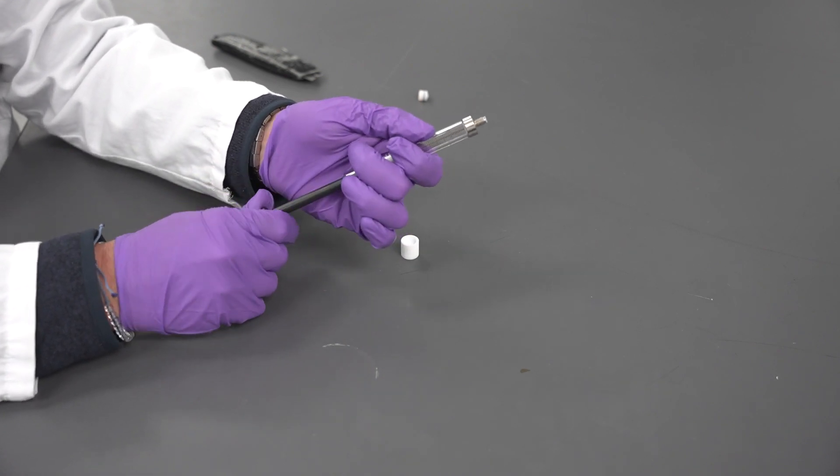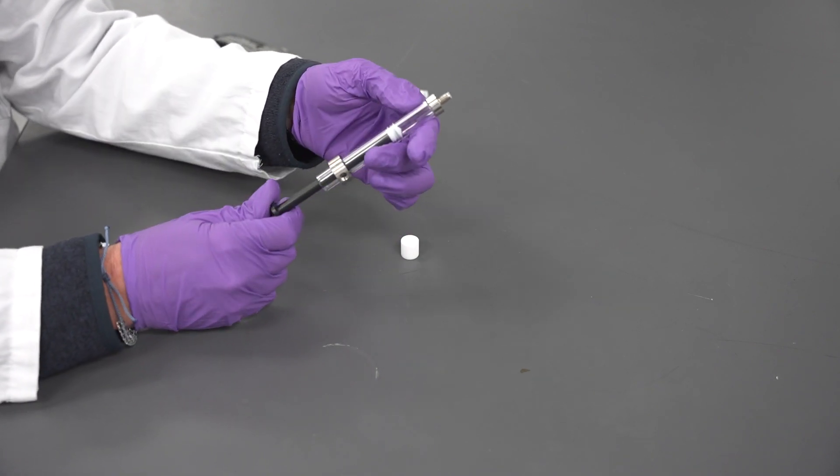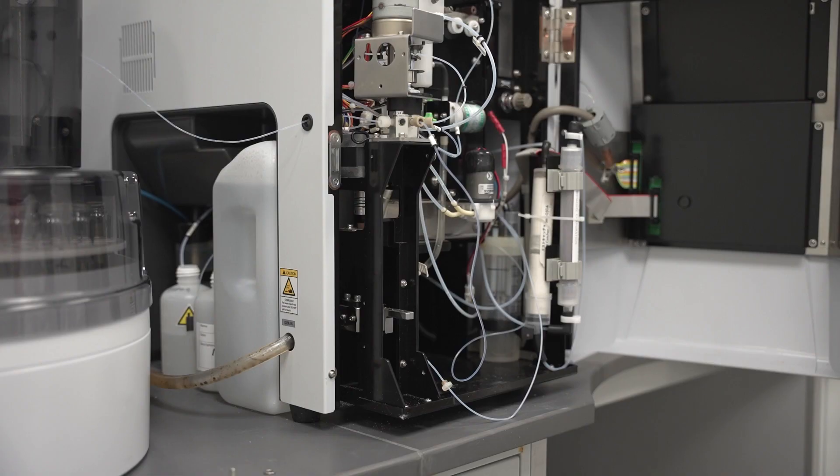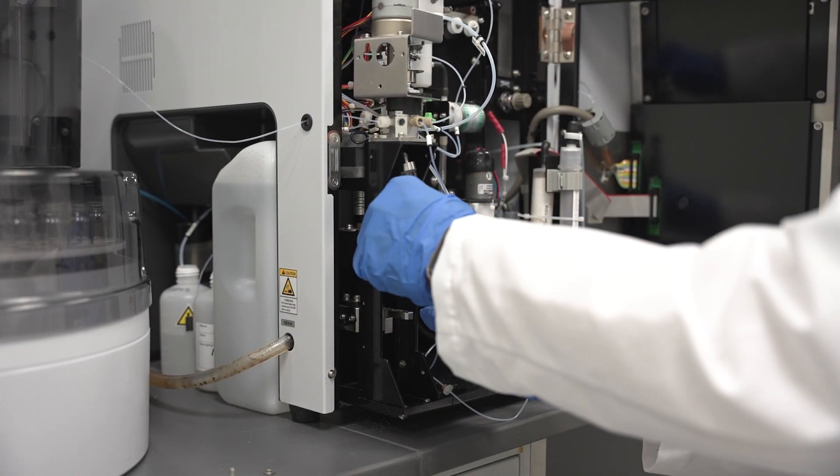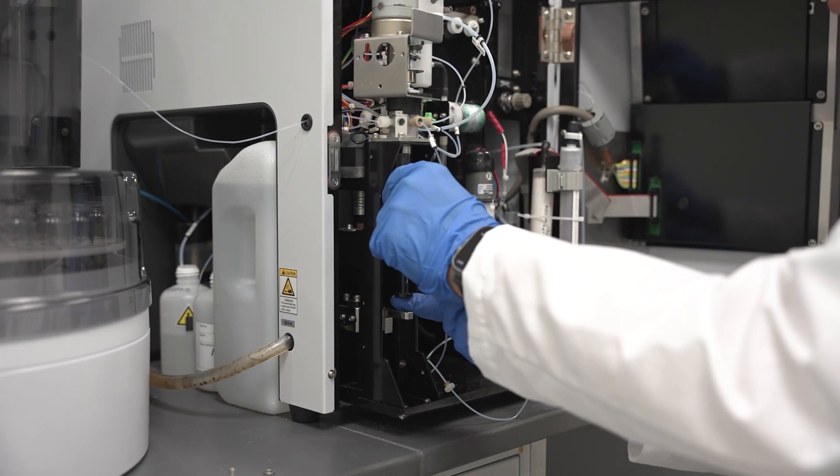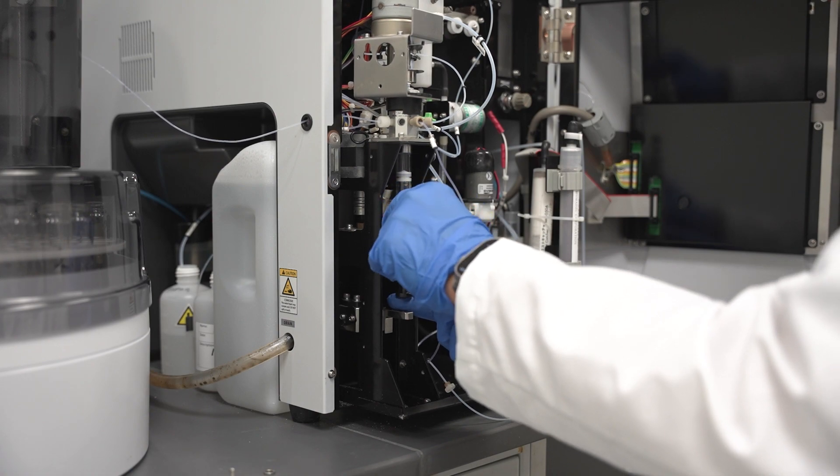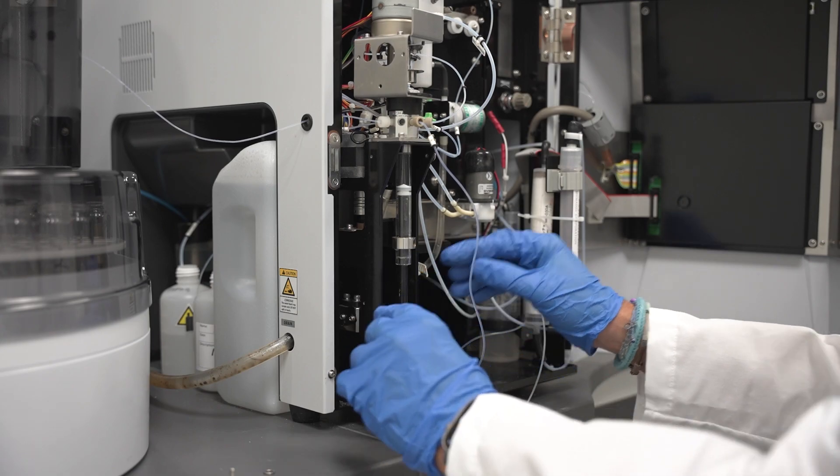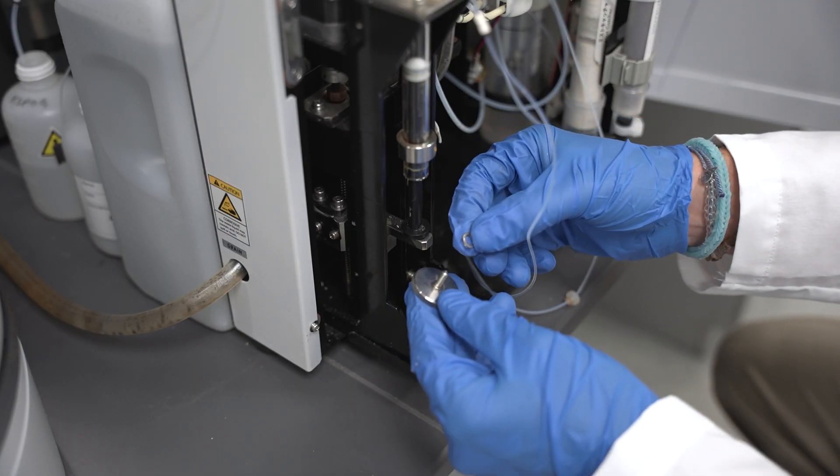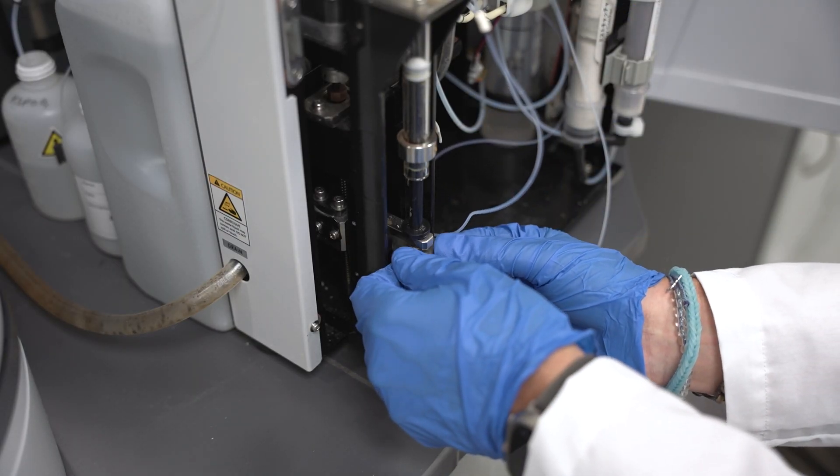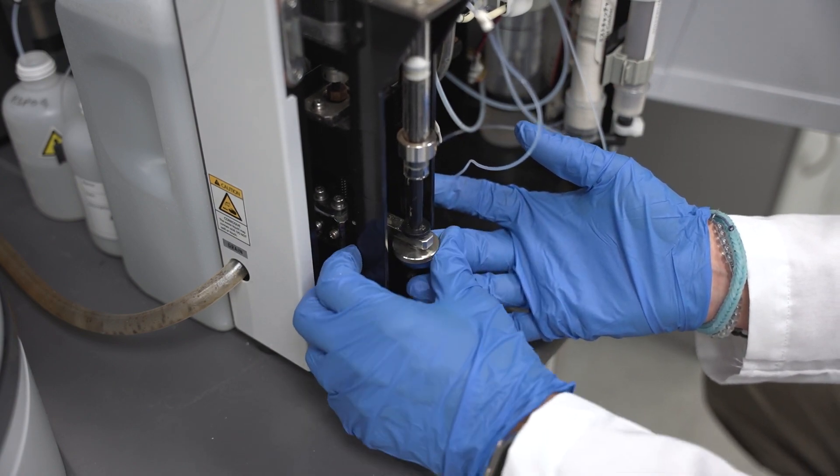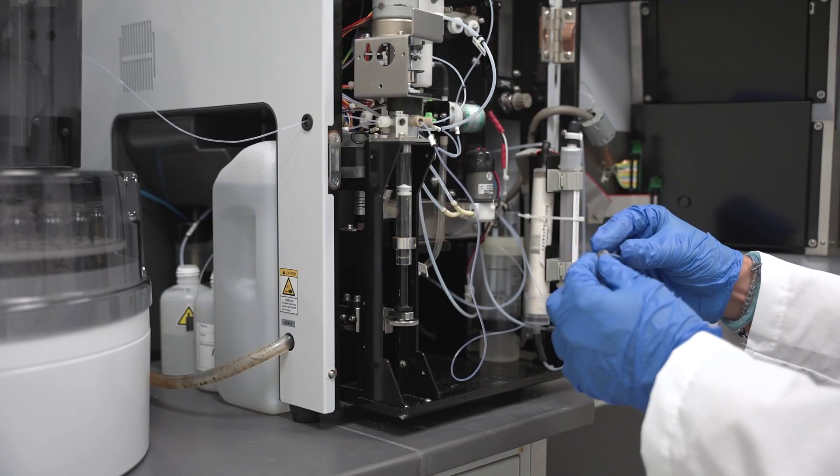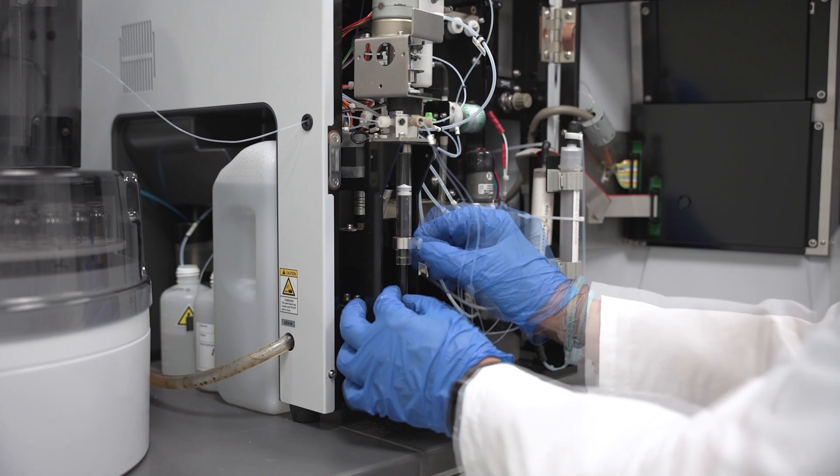Re-insert the plunger into the barrel of the syringe and then screw the syringe back into the valve. Finally, replace and tighten the retaining screw to secure it to the drive arm. Reconnect the sparge tube to the syringe.